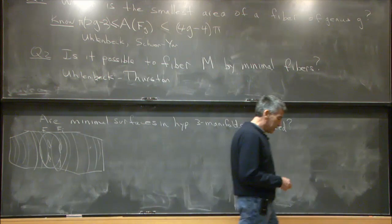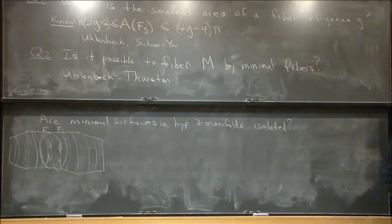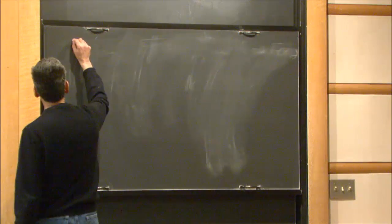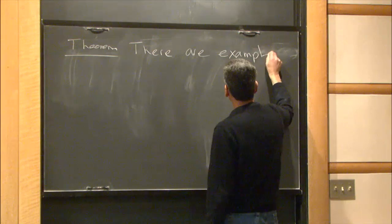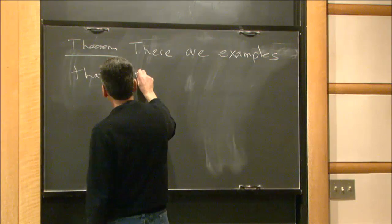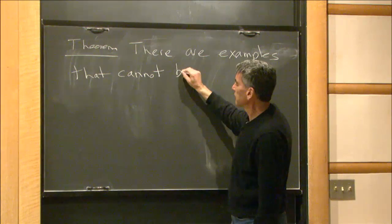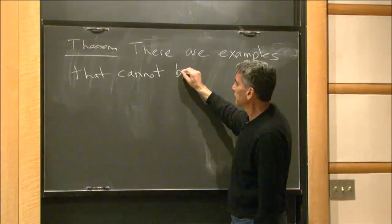There's another motivation: this gives an approach to understanding whether negatively curved three-manifolds remain negatively curved under Ricci flow. What I'm going to prove today is a partial answer — the theorem is that there are examples of three-manifolds that fiber over the circle that cannot be fibered with minimal surfaces.